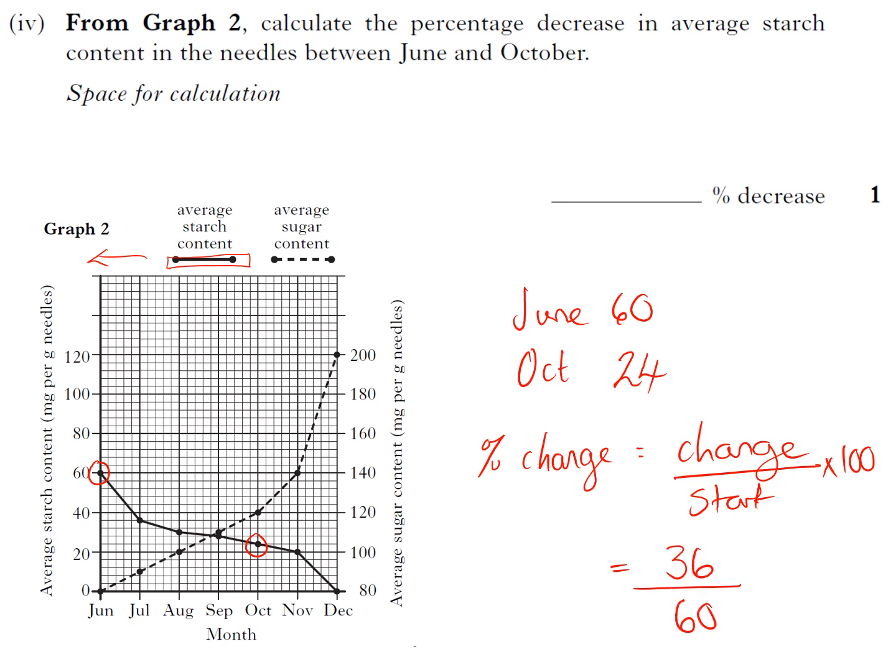I'm plugging into a calculator so I don't do something stupid in my head. So 36 over my start, which was June, which is 60, and then times that by 100. That's quite a nice number because obviously they both divide by six, so that is 60 percent.